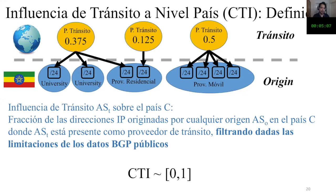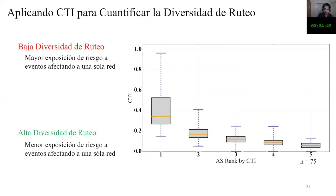The value of 0.5 is close to the maximum level of the metric in Bolivia. This shows that half of all addresses go through one single autonomous system. In other words, if any event affects this autonomous system, then half of the addresses in Bolivia would be affected. The results from the 75 countries — which we knew were at risk because they don't have foreign peering — are shown here.